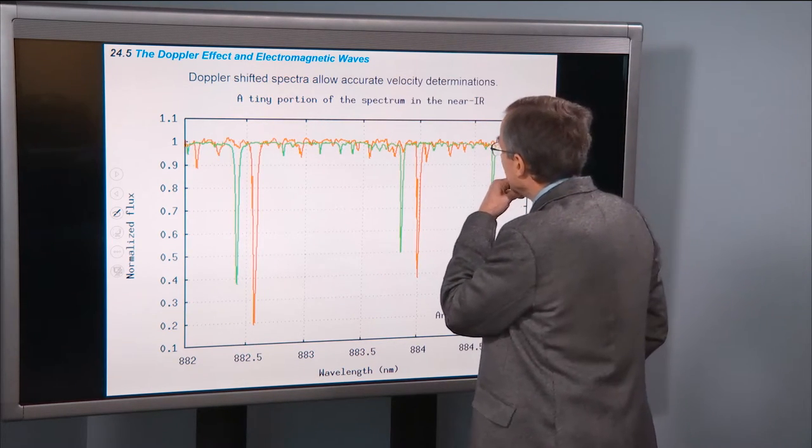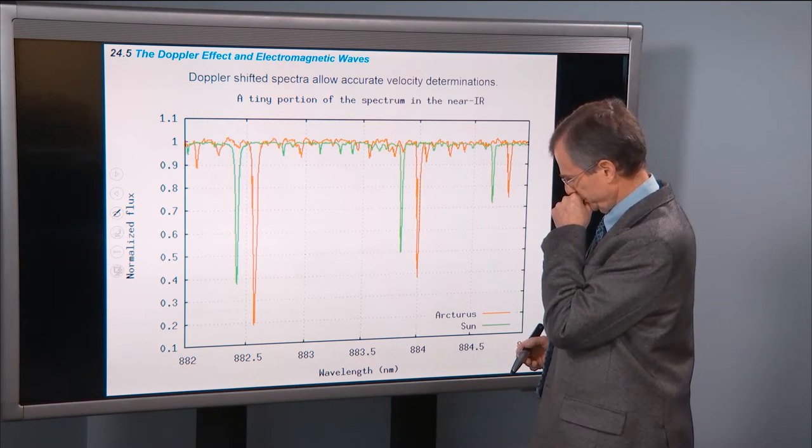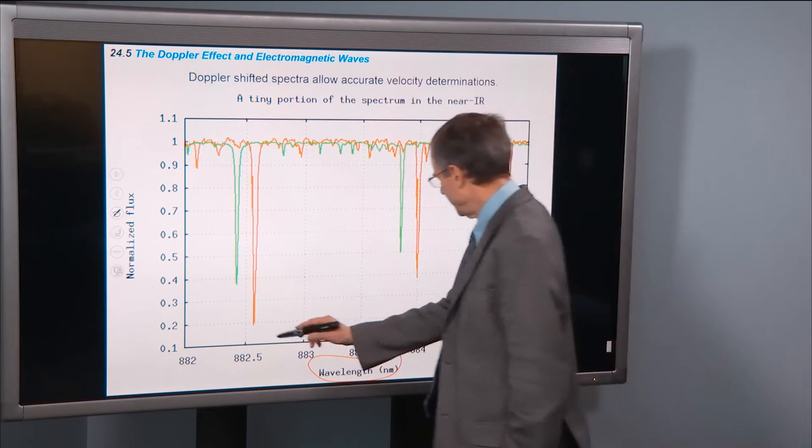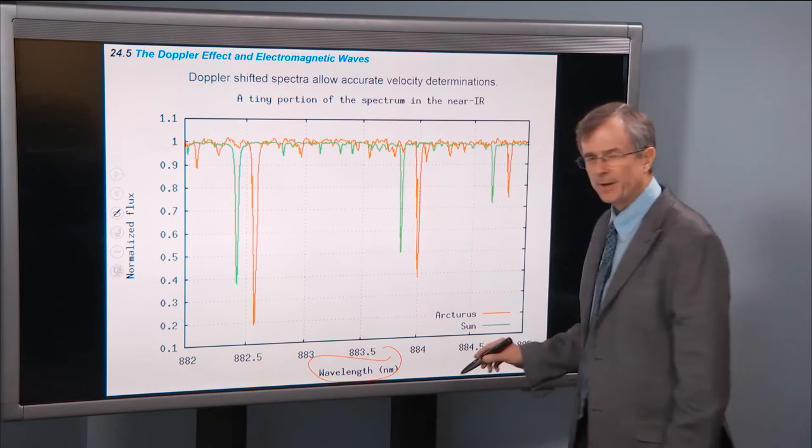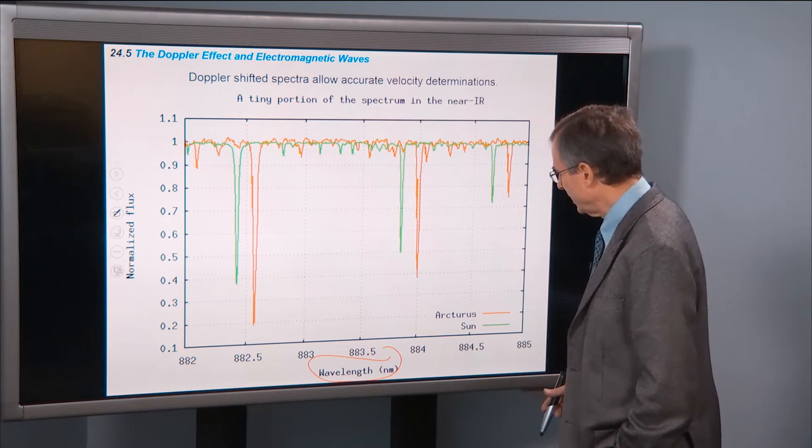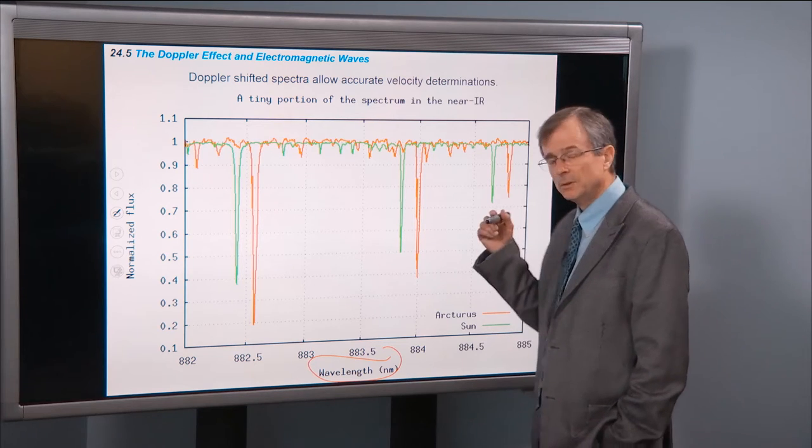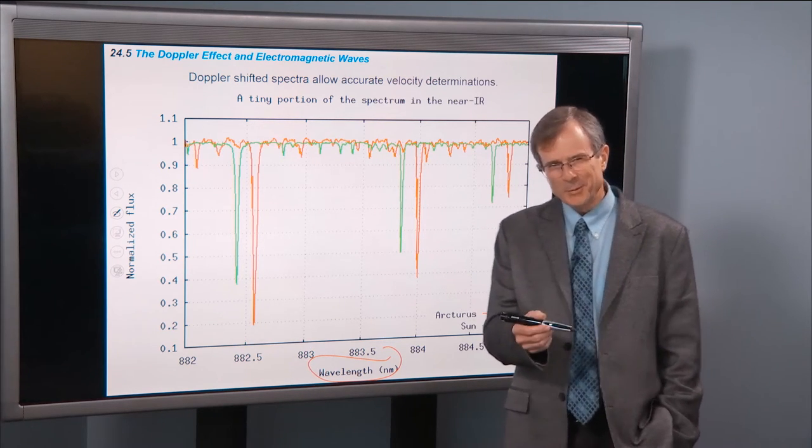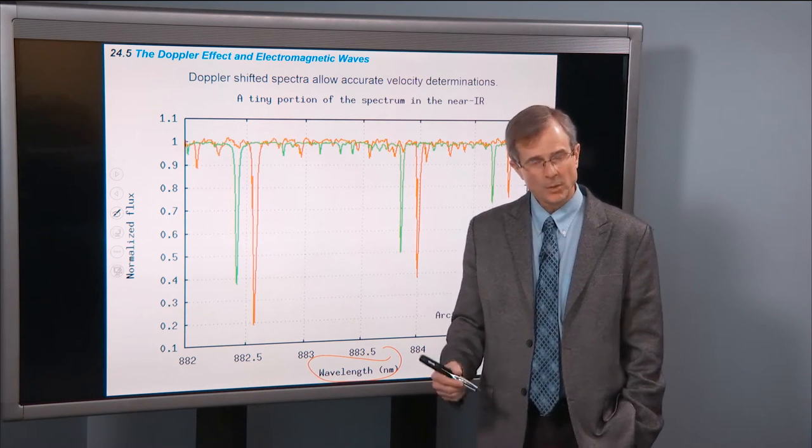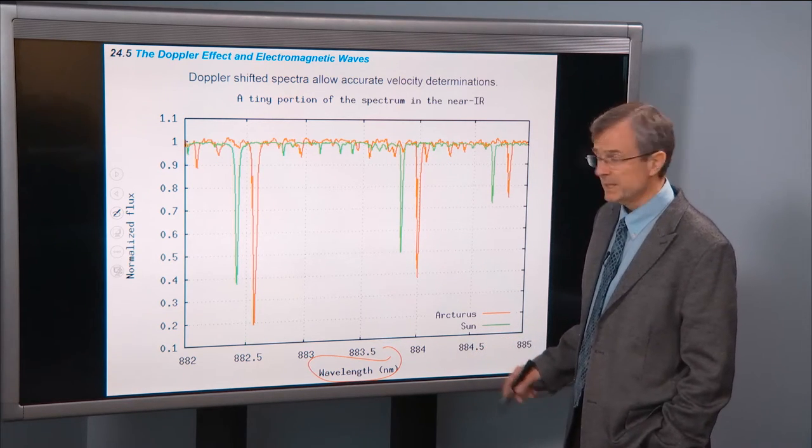Doppler shifted spectra allow accurate velocity determinations. These are spectra, a very narrow range of wavelengths, only 882 nanometers up to 885. That's a very narrow window. And this is in the near-infrared wavelengths. So what are infrared wavelengths? They're ones that are longer than the visible, longer than red. Red's about 700, here's 800. Longer wavelengths.